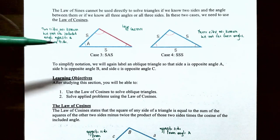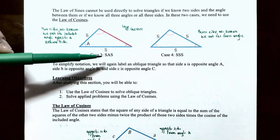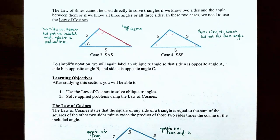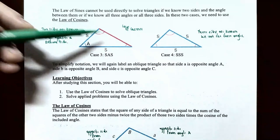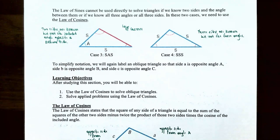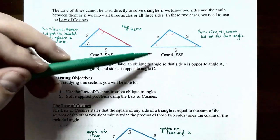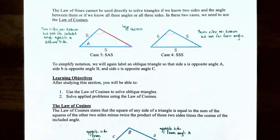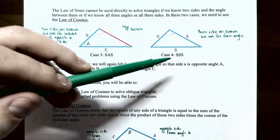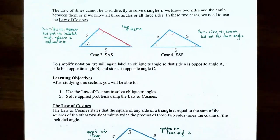In case three, if you have a side, an angle, and a side — an SAS triangle — you have two sides that are known and you do not have the included side opposite the known angle. In this case you cannot use the law of sines. Or in case four, if you have a side-side-side triangle, an SSS triangle, you have all three sides known but none of the three angles. You cannot use the law of sines.